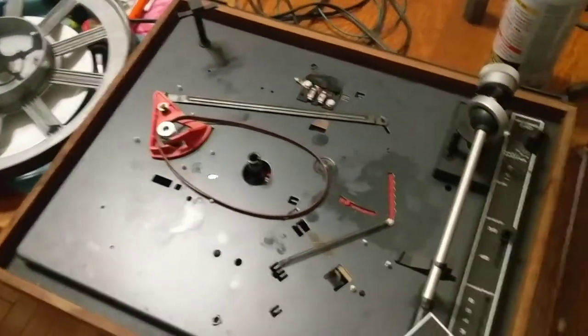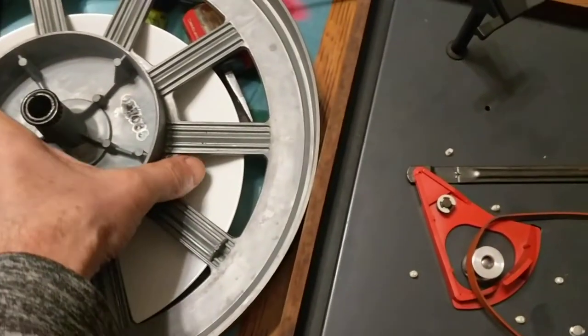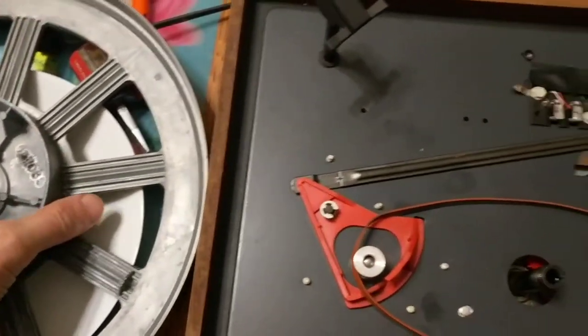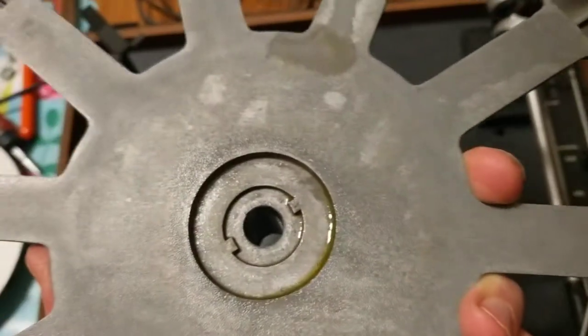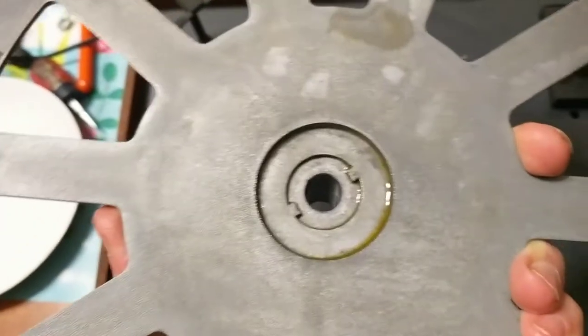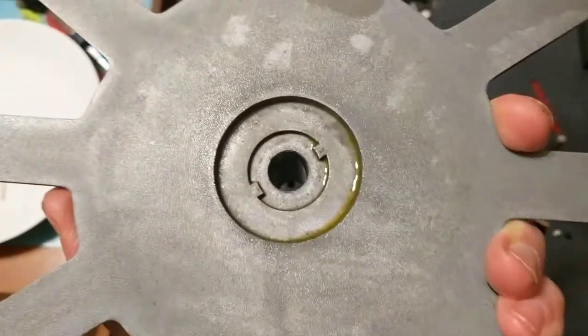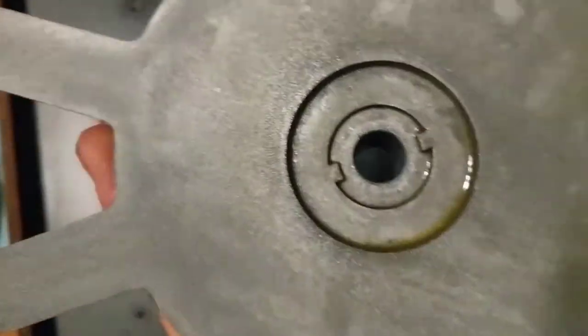Okay, this is a short video for the removal of the platter on a BIC 940 turntable. This turntable goes back probably to 1980 or 1979 and hasn't been used in probably 10 or 20 years.